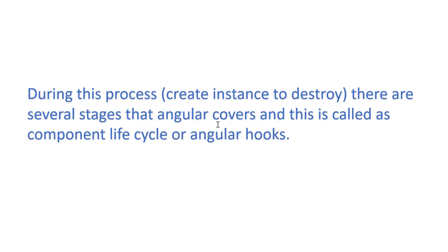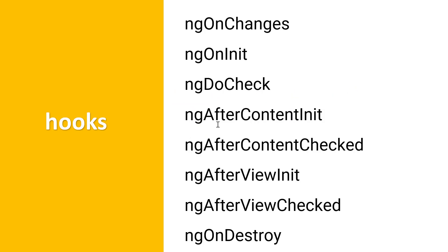We can represent these lifecycle stages using methods. Here is a list of all the methods: first is ngOnChanges, then ngOnInit, ngDoCheck. As of now you are only familiar with ngOnInit, since that is the only method we have been using in our components. Along with ngOnInit there are more methods, and at the end we have ngOnDestroy — which means at the time of ngOnDestroy, Angular destroys the instance of the component.